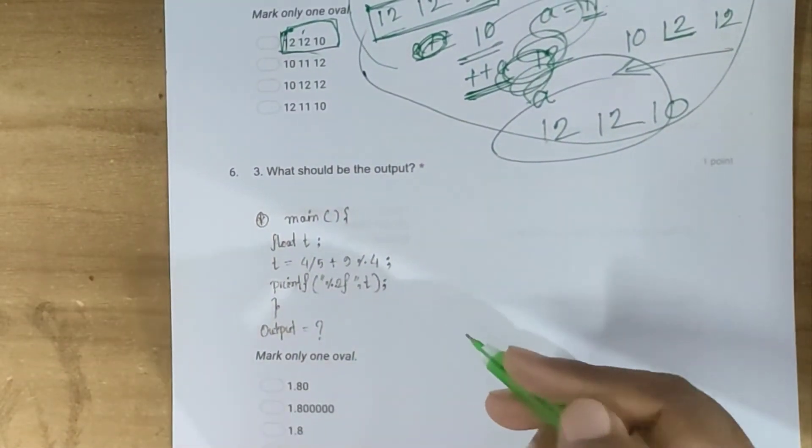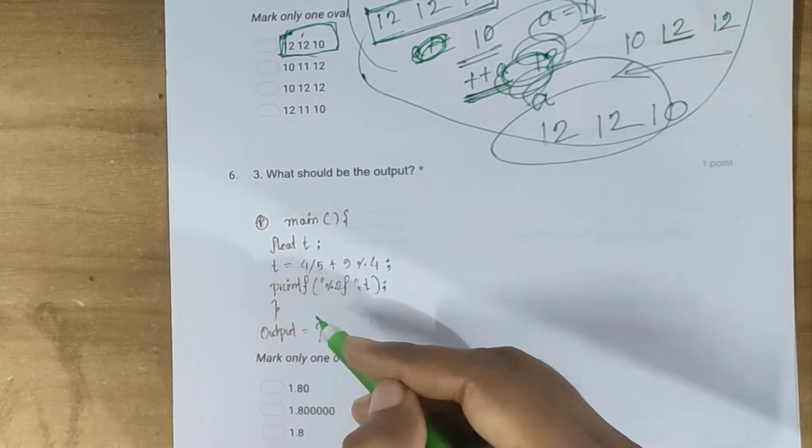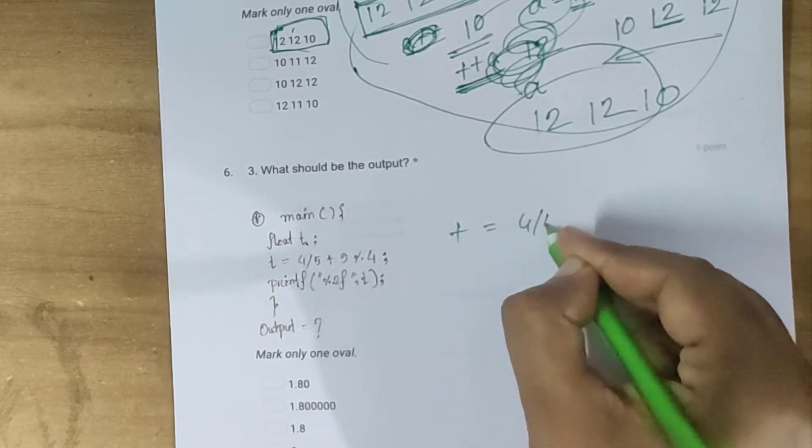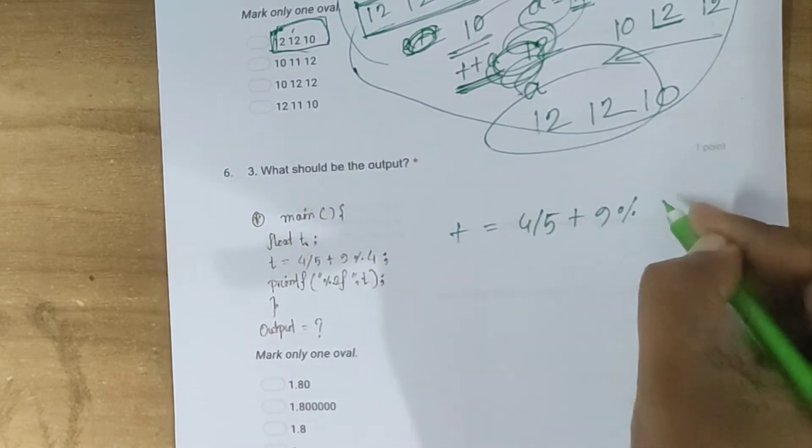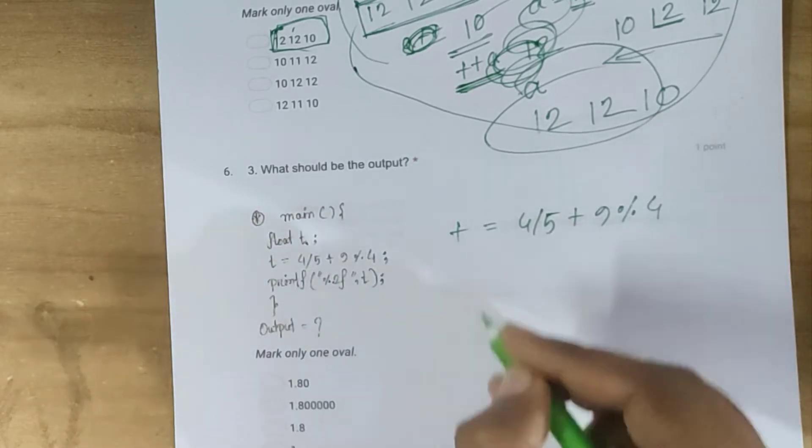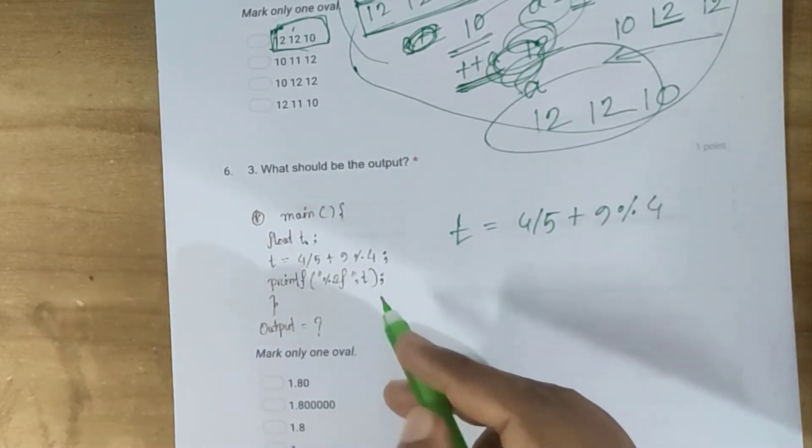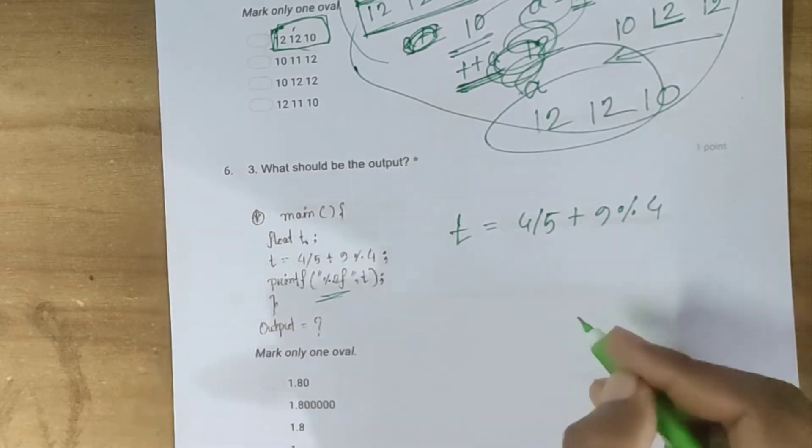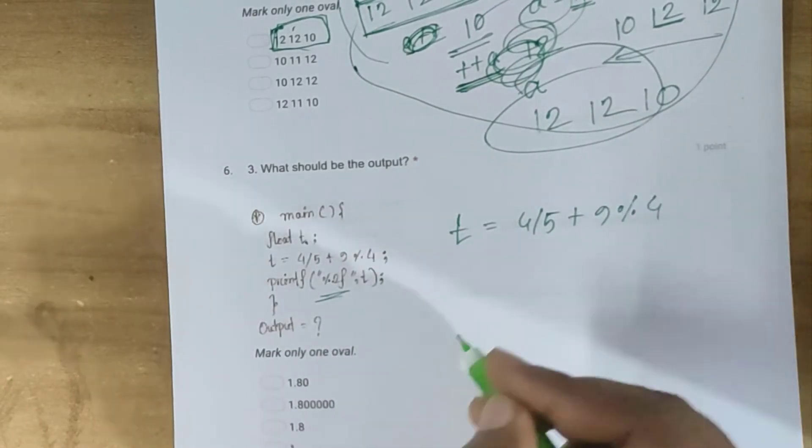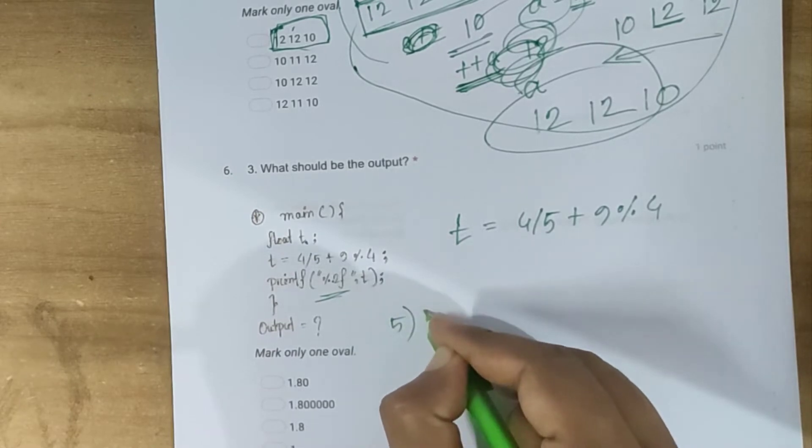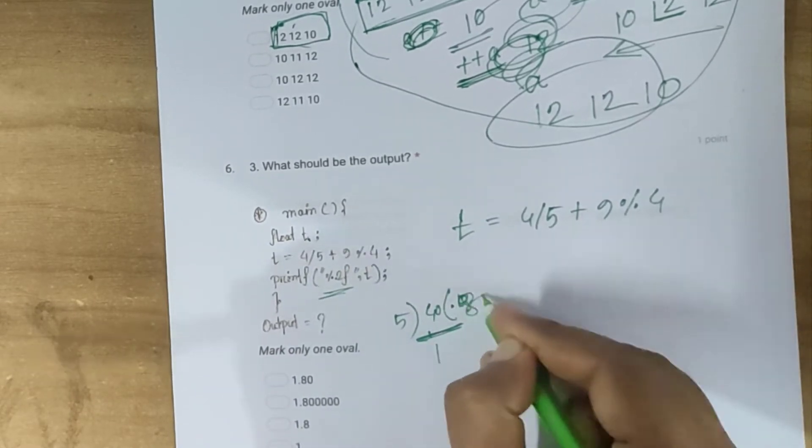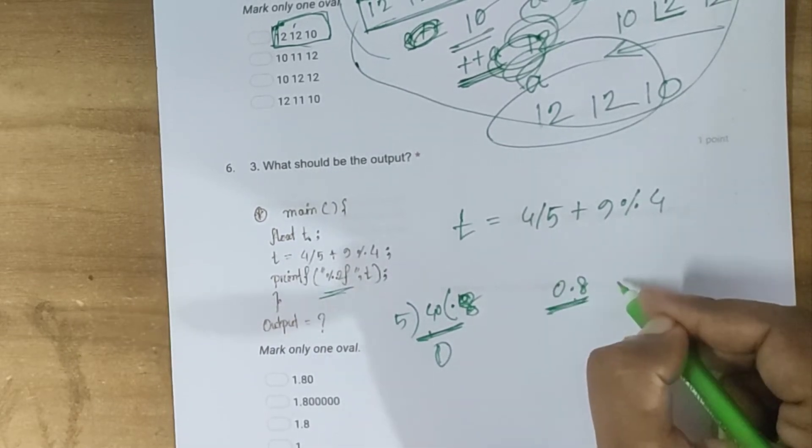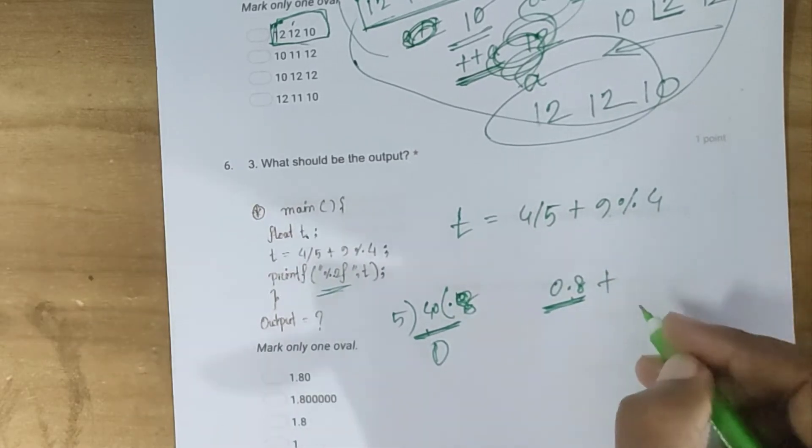So, there is a program that we can see here. Here, we have the float type variable t. So the t equals to 4 by 5 plus 9, and the modulus is 4. And first will be. So to the point is, 0.8. 4 by 5, the greater 0.8, okay?